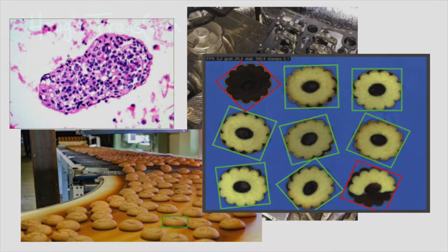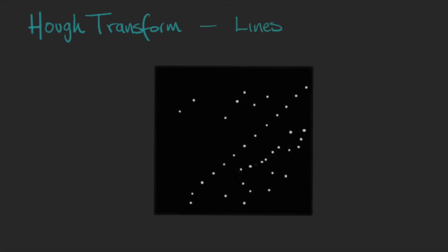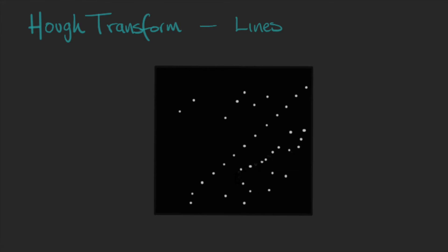So let's start by the simplest shape, the straight line. In our image we can have several points that resulted from our edge detection algorithm and we want to find the straight line that some of these points represent. We know the line formula y equals mx plus c.